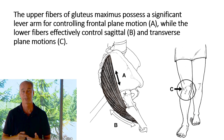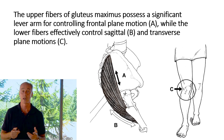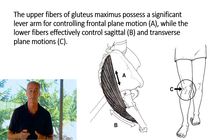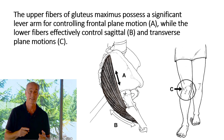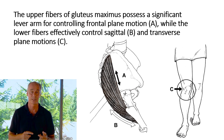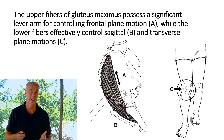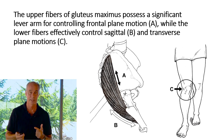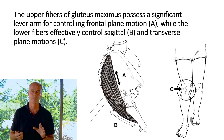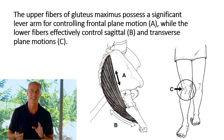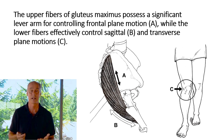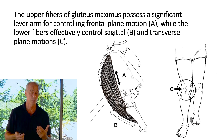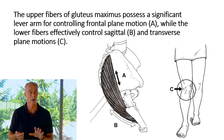It's very important to evaluate glute max strength — it's probably the most important muscle stabilizing you during a running cycle. Interestingly, you can be paralyzed in glute max and still be able to walk because walking uses a stiff leg. Gluteus medius controls frontal plane motion of the pelvis. It's when the knee flexes that glute max becomes important for stability.